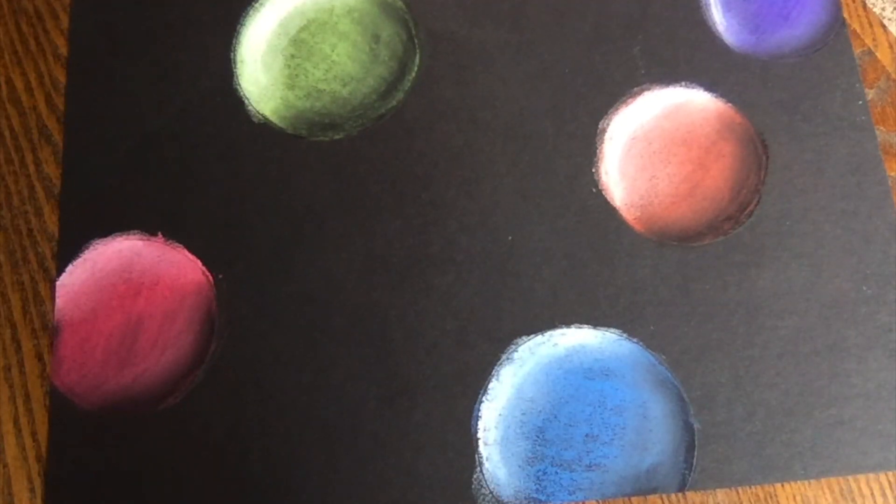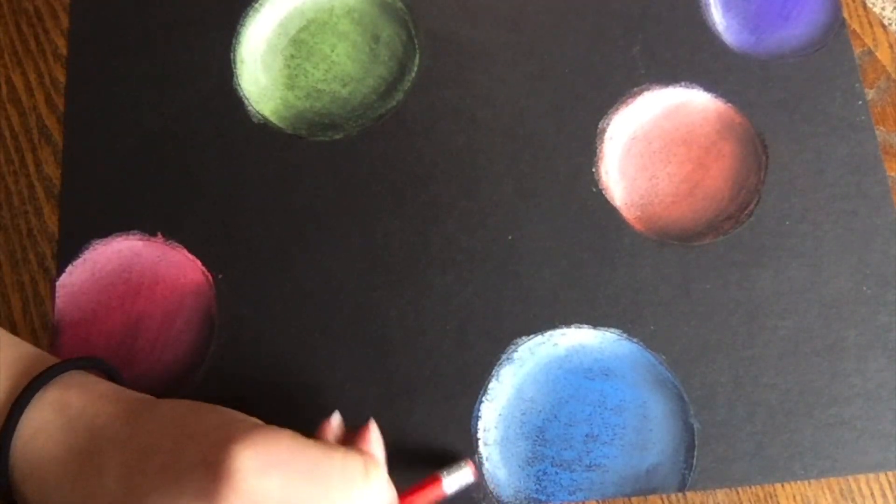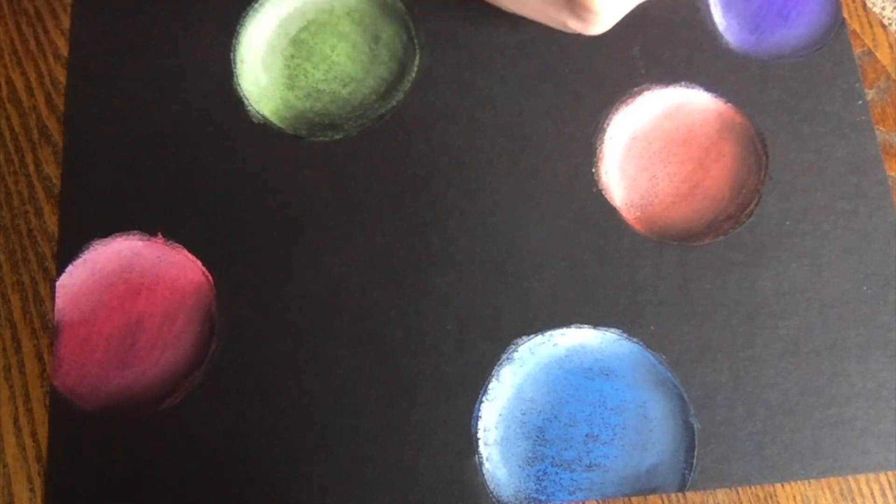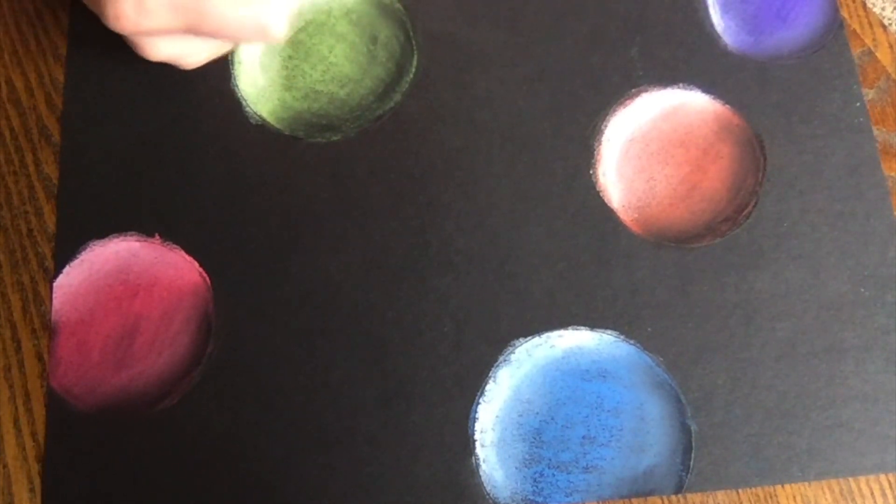One thing that you can do then with chalk pastel is you can take a little eraser. And sometimes you can erase places where your chalk got a little bit outside the line. So I'm just going to go through and clean this up a little bit.